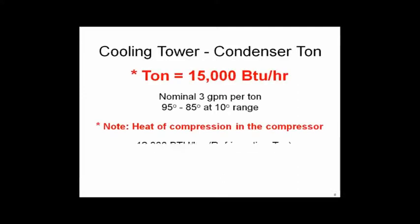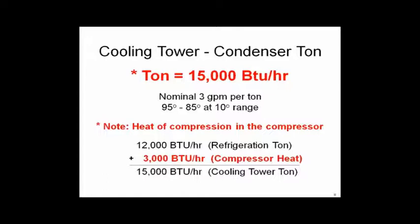CTI defines a cooling tower ton differently than a refrigeration ton. The refrigeration ton is 12,000 BTUs per hour — that comes from melting 2,000 pounds of ice in 24 hours using the heat of fusion (144 BTUs per pound divided by 24 hours). That's not the weight of the machine. On the condenser side — the cooling tower side — CTI defines the ton at 15,000 BTUs per hour.